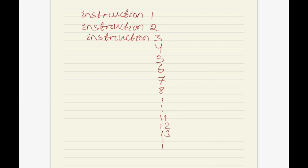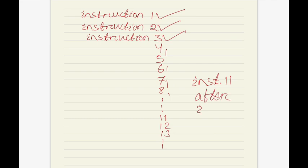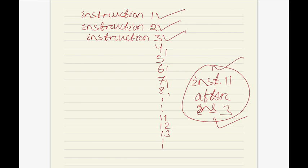Generally, first instruction 1 gets executed, then instruction 2, then instruction 3, and so on. However, in some cases it is required to change the order of execution or flow of control. For example, in some cases it is required to execute instruction 11 after instruction 3. Control structure changes this flow of control as per the requirement.